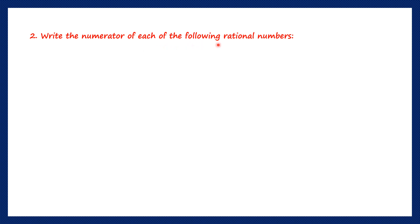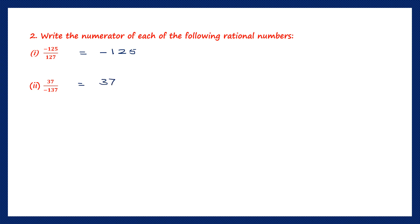Question 2: write the numerator of each of the following rational numbers given. The first one is minus 125 by 127. The numerator is the number above the fraction bar, so minus 125 is the numerator of the first one. The second one, the numerator is 37. The third, the numerator is minus 85.